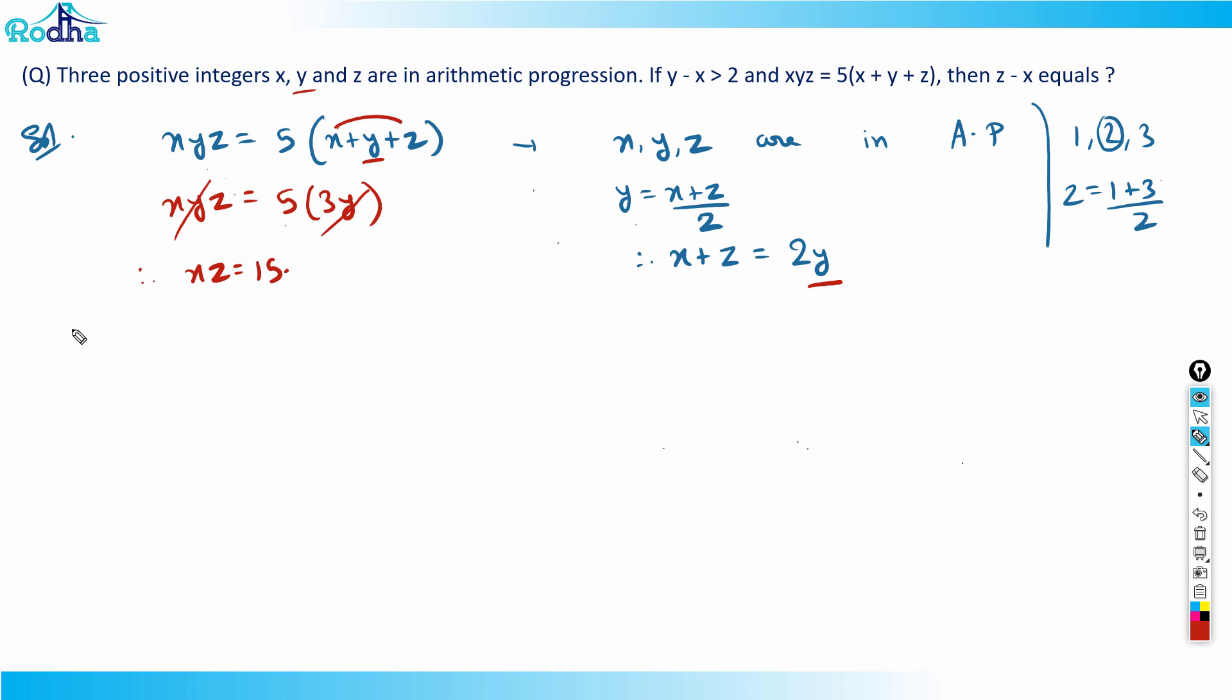So if I get x into z equal to 15, and because x and z are positive integers, the combinations possible—now you know that y minus x is more than 2, we'll take care of that. Whatever the combinations possible, x into z equals 15, so the values will be either 3 into 5 or 1 into 15. 15 has only these four factors: 1, 3, 5, 15.